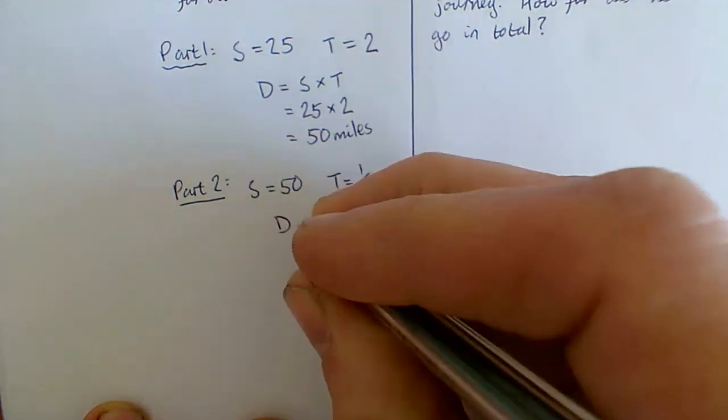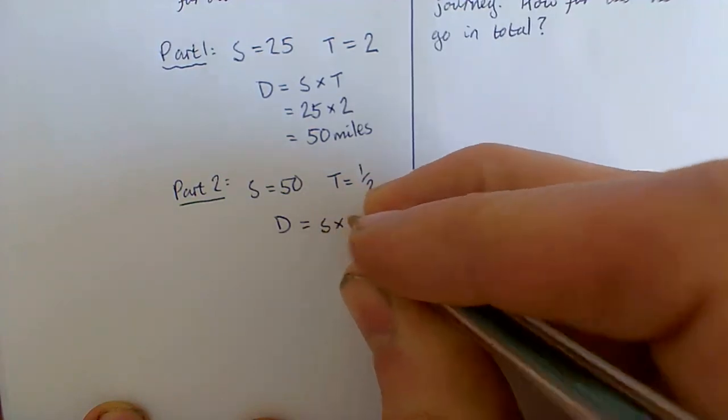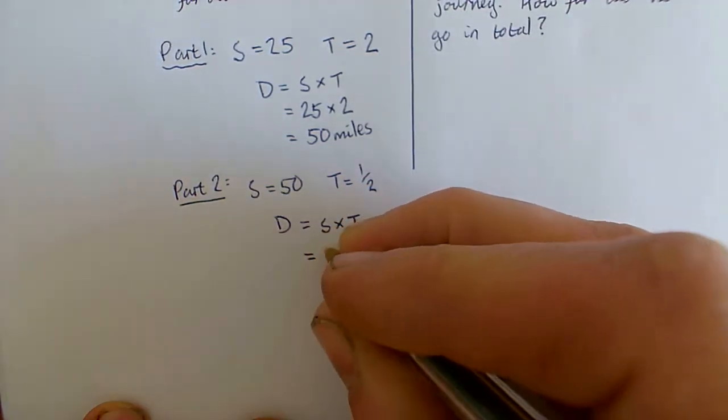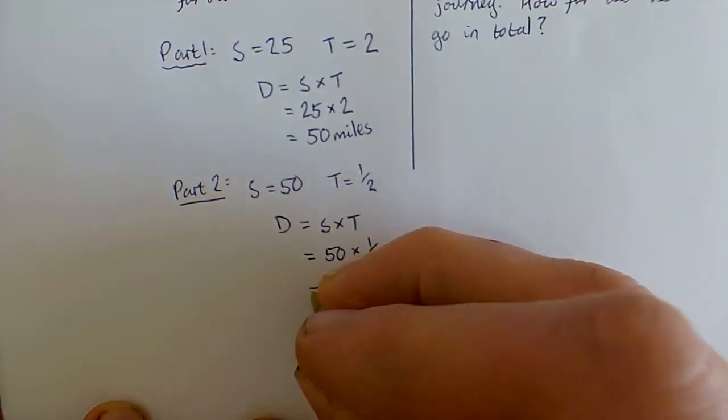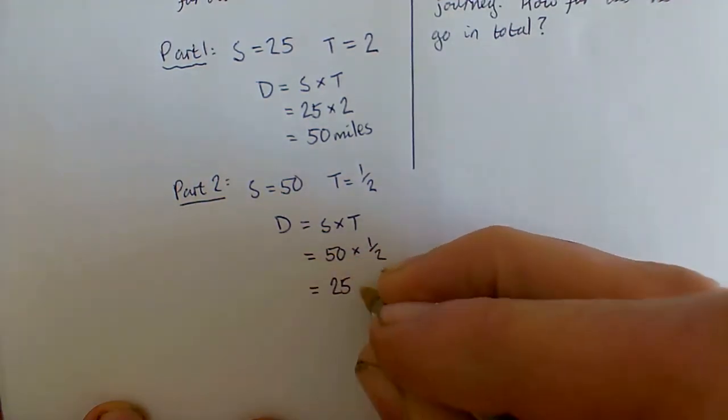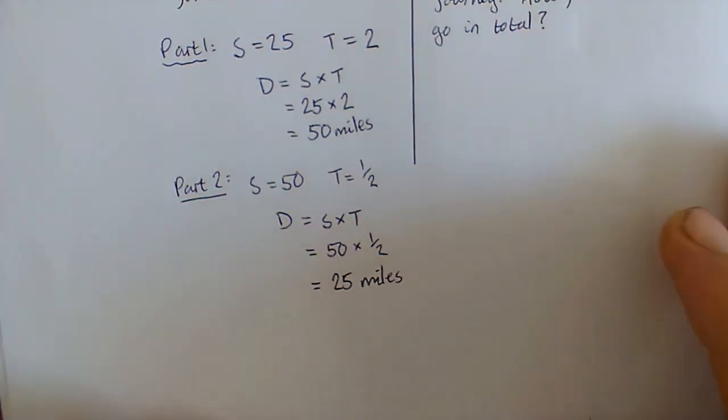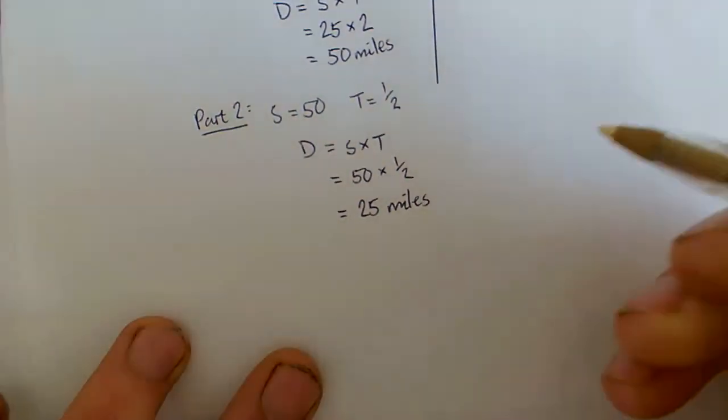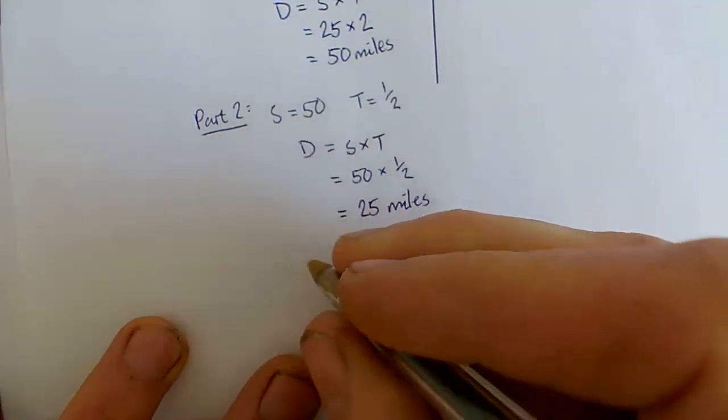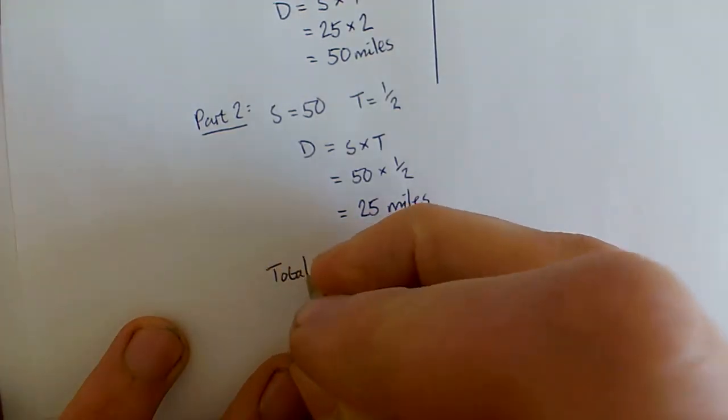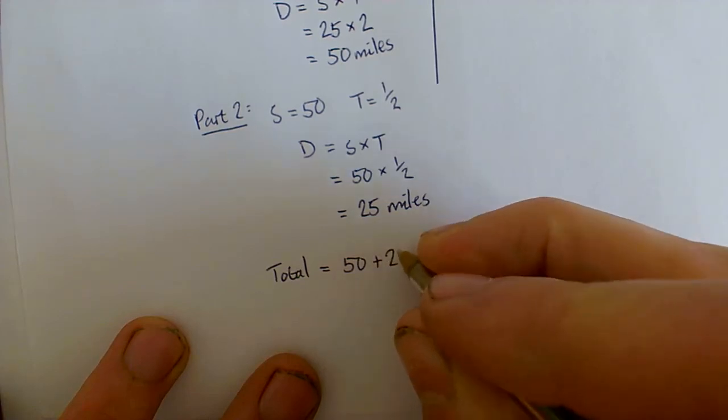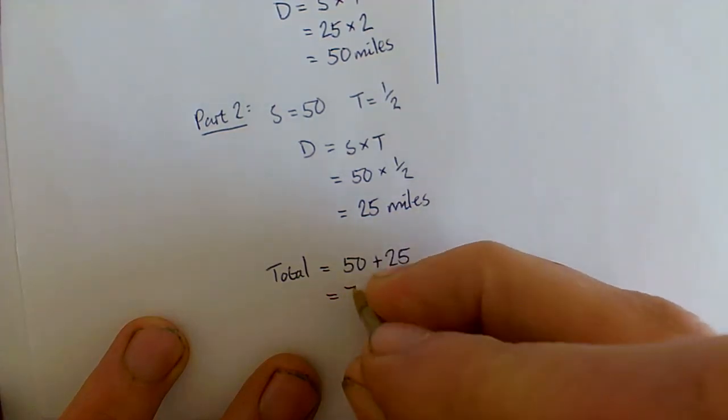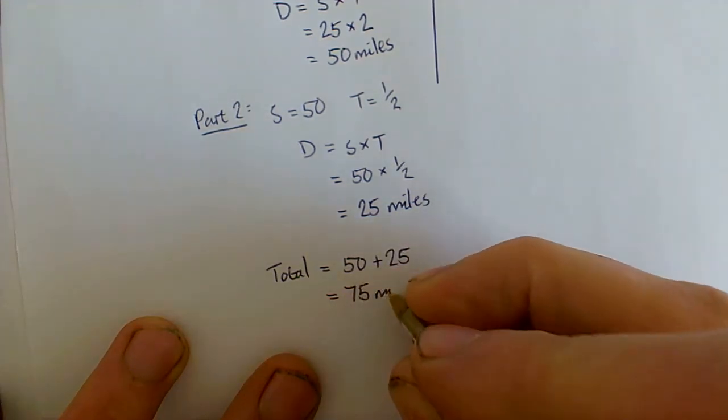The second section, we have D equals S times T. That's 50, that's 50 times a half, which is 25 miles. Finally, we've got to finish off because we were asked for the total distance. So the total is adding our two bits together. So that is 50 add our 25. And so overall, we have 75 miles.